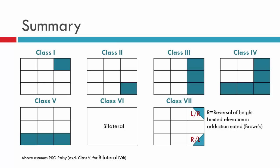This particular grid clearly indicates a right superior oblique palsy. To translate it into a left superior oblique palsy: for class one, the greatest vertical deviation would be in the mirror-image position, and similarly for class two and so forth. That brings us to the conclusion of this video. Thank you for watching.